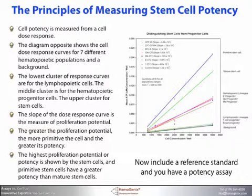Primitive stem cells have a greater potency than more mature stem cells. Include a reference standard and you have a potency assay. Let's see how a stem cell potency assay is actually performed.